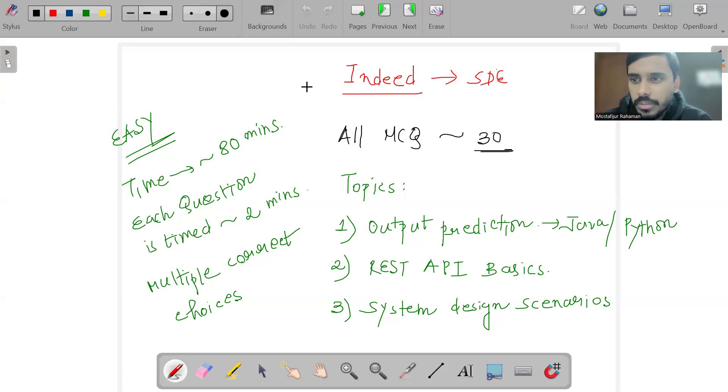What were the topics for the MCQs? The problems were more or less revolving around Java and Python code output prediction - that was one of the sections. There were also some nitty-gritties of Java and Python.